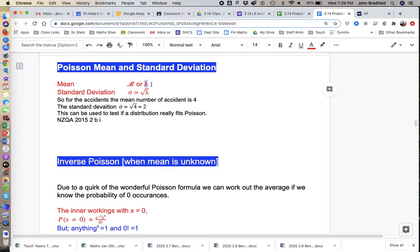They're exactly the same, so they're completely interchangeable. For the standard deviation, and this will be a slightly familiar-looking little symbol there, we simply square root the mean. So if the mean is four, the standard deviation is two, and the variance would be four.